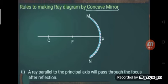C is for center of curvature, F is for focus, P is for pole, and this line is the principal axis. The center of curvature is the exact center of the circle that forms the mirror. The focus is located at exactly half the distance between the center of curvature and the pole.